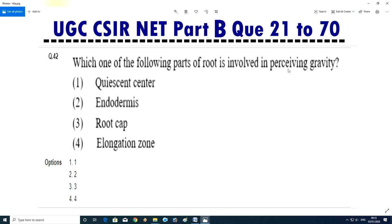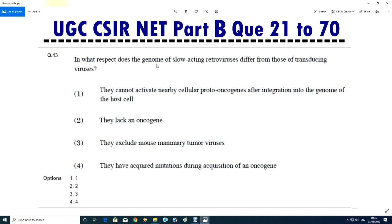Question No.43 - Which one of the following part of a root is involved in perceiving gravity? Quiescent center, endodermis, root cap, or elongation zone. Answer is third, root cap.